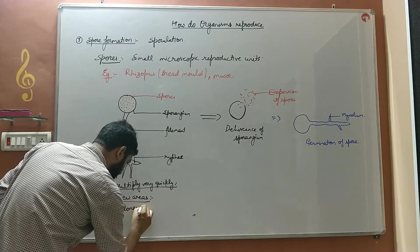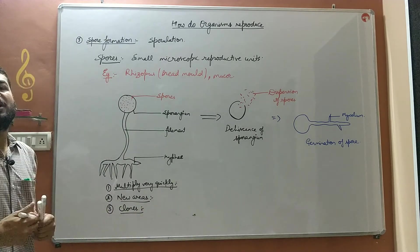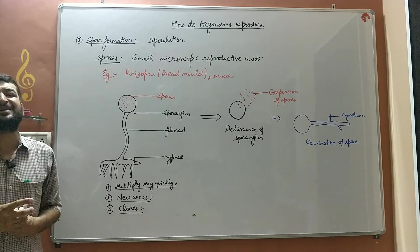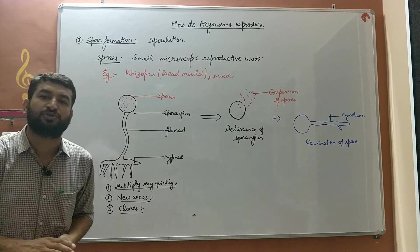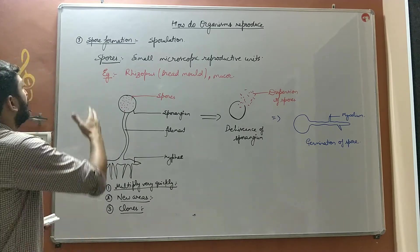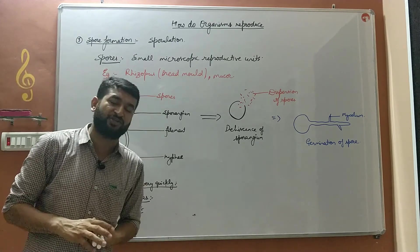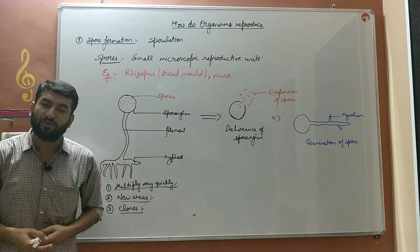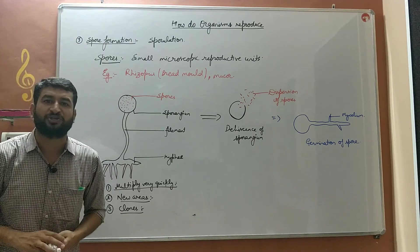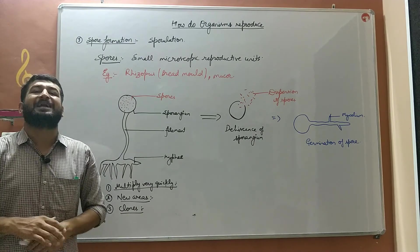Third advantage is clones. Clones, that is morphologically and genetically identical organisms, are known as clones. Asexual mode of reproduction will give rise to the formation of clones, which is an advantage. There is no change in the organisms, so that is spore formation along with its advantages.